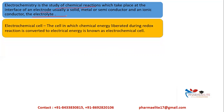Under electrochemistry, you study something called an electrochemical cell — everything about the topic revolves around this. An electrochemical cell is a type of cell in which chemical energy liberated during a redox reaction is converted to electrical energy. There are different types of electrochemical cells, which we will look at as we move ahead.